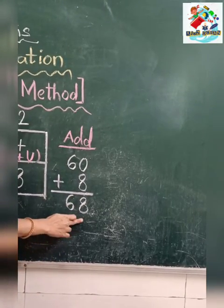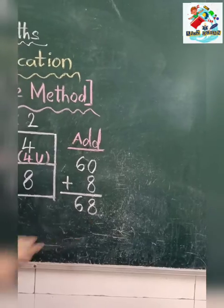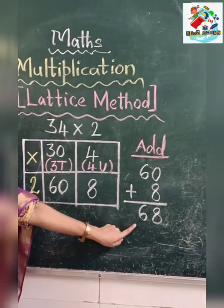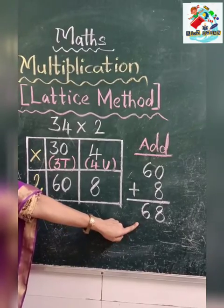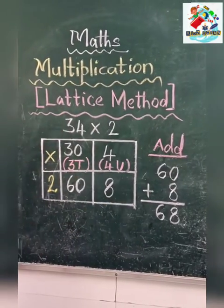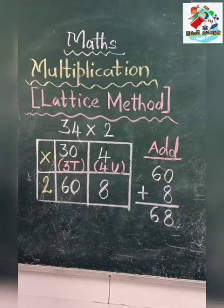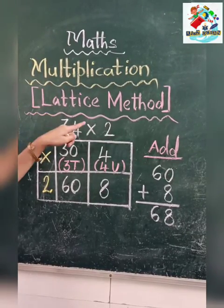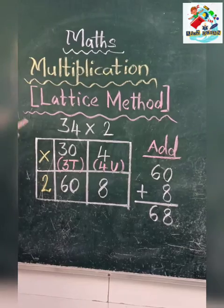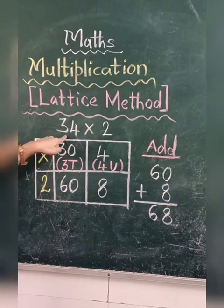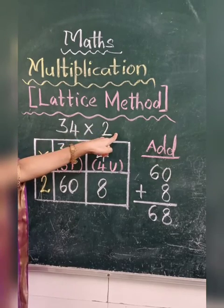So our final answer is 68. So when we multiply 34 into 2, we get the answer 68. This is one of the methods of solving multiplication and this method is called the lattice method. So I multiply 2 digit number with 1 digit number. Is it clear to you children?